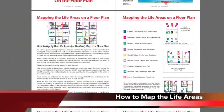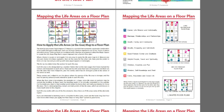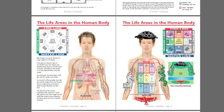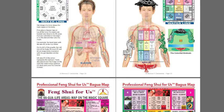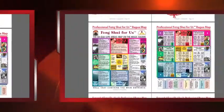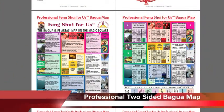It teaches you how to map the life areas on a floor plan, when to include the garage or not, with examples. The life areas in the human body, and this is the explanation of why using the compass of the heart suggested by Master Lin Yun — aligning the bottom of the Bagua Map with the wall containing the main entrance — works so well, because it's actually biology-based. In these charts you can see how each life area roughly corresponds with the location of organs in the body, in the torso.